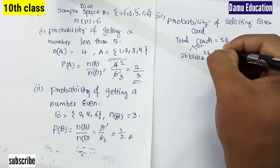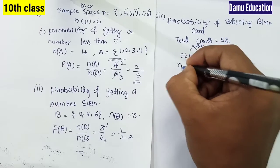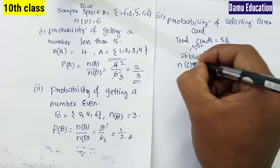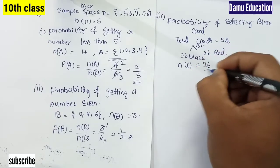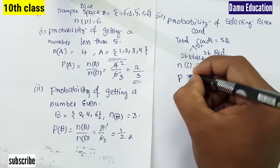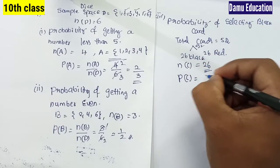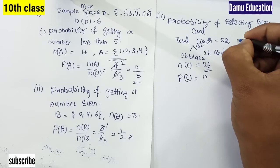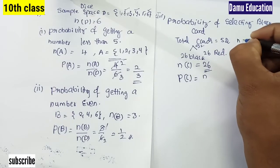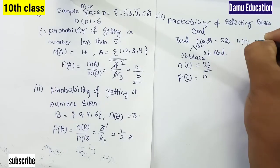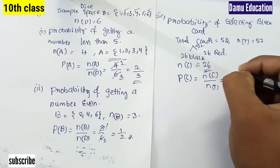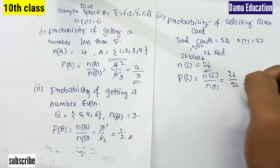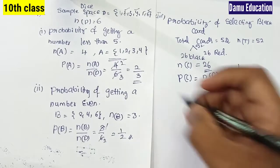Number of possibilities of getting a black card = 26. So P(black card) = N(C) / N(T) = 26/52 = 1/2.